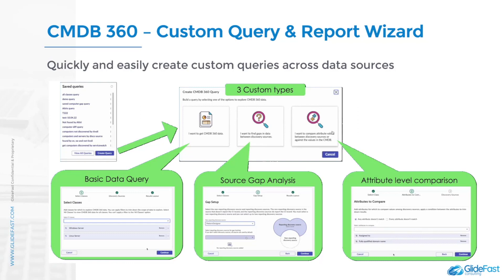And finally, we have attribute level comparison as the third type. This allows you to create a query that you can use to identify CIs with attribute values that differ across multiple discovery sources or against the CMDB. It queries at least two discovery sources and/or the CMDB for configuration items that match your criteria.